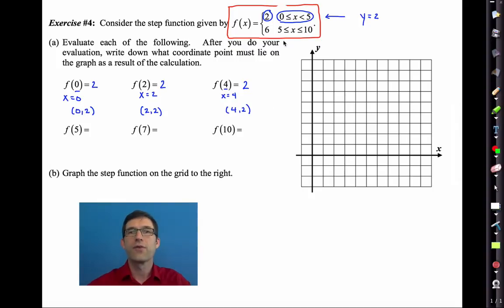On the other hand for all values of x between 5 and 10 including the 5 including the 10 our output is 6. So when we have an input like 5 then the output here is 6 giving us the point 5, 6. Likewise when we have an input of 7 our output's also 6 giving me the point 7, 6. And when our input is 10 our output's also 6 giving us the point 10, 6.